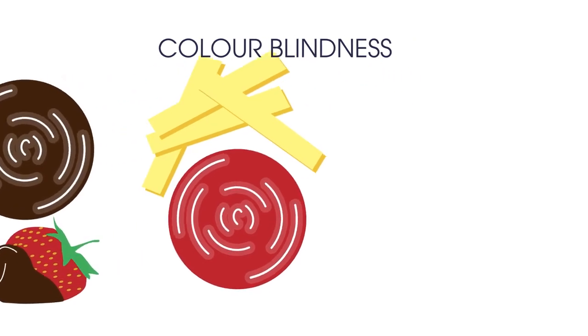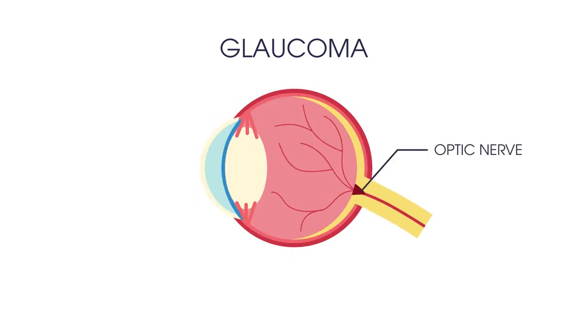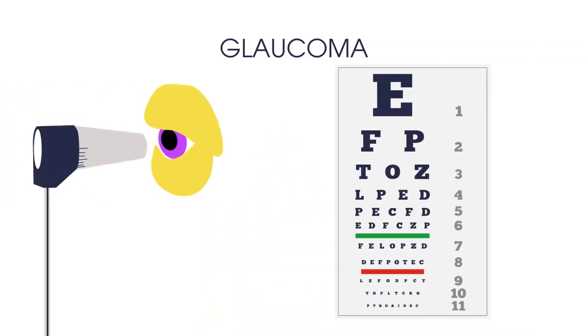The second eye condition we're going to discuss is glaucoma. This is where your optic nerve is damaged by the pressure of the fluid inside your eye. Most types of glaucoma have no symptoms so a regular eye test is the only way to know you have the condition. It can lead to blindness if left untreated.